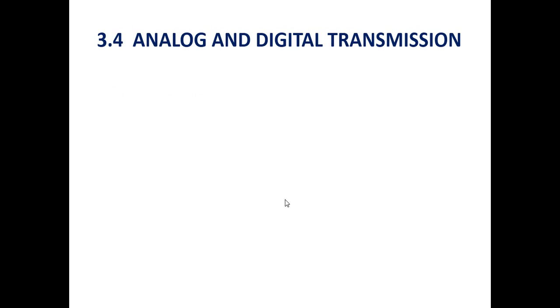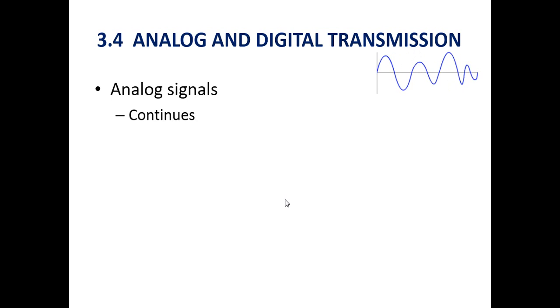This video covers analog and digital transmission in computer networks. First is analog signaling. In computer networks, analog signaling is in the continuous form — like how we speak in our day-to-day life. It is in the range of a specific interval, starting from zero up to some upper high limit, so it is in the continuous form.